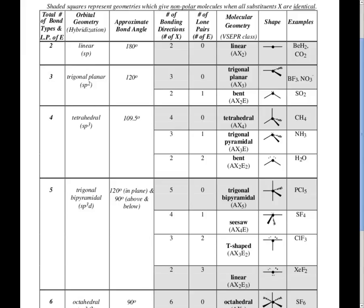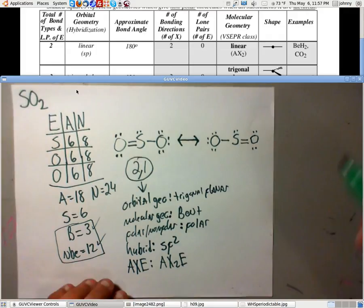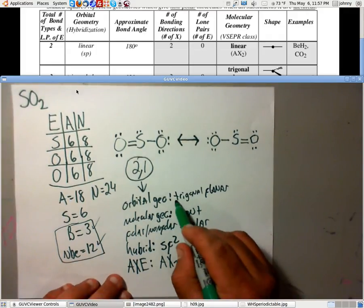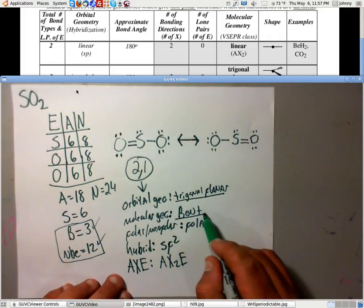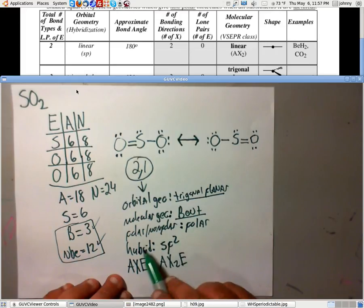So, just so you can see what I've done on mine, I've made sure to list those. Orbital geometry is trigonal planar. Molecular geometry is bent. It's polar. It's SP2. Its AX notation is AX2E.